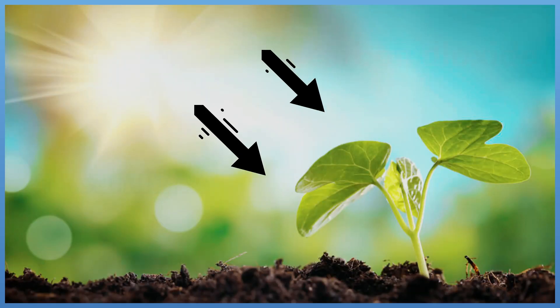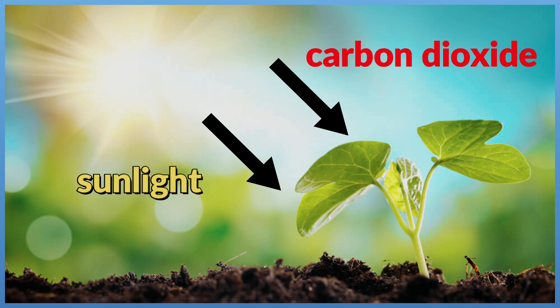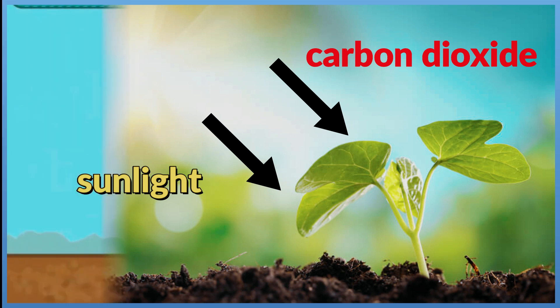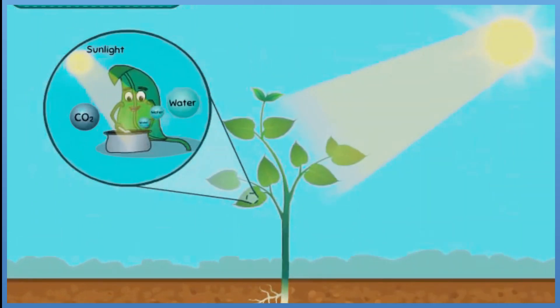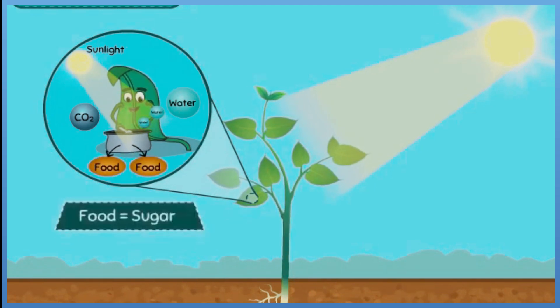Green plants use their leaves to collect sunlight and carbon dioxide from the air. Inside the green plant, sunlight allows carbon dioxide to combine with water to make sugar, which gives the plant the energy it needs to grow.